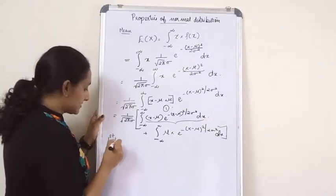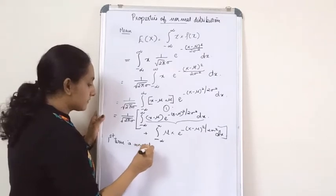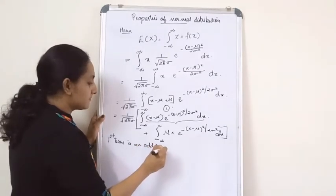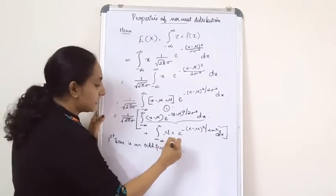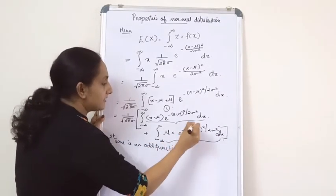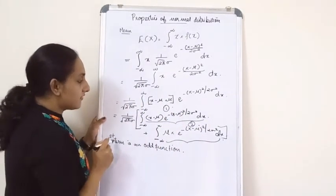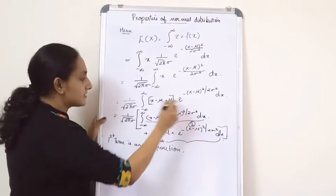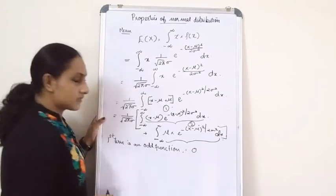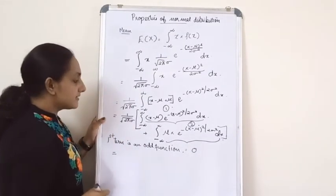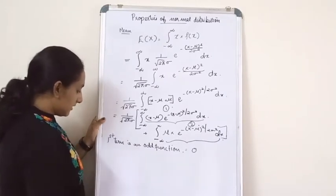The first term is an odd function. Since the first term is an odd function, when you integrate it, you will get 0. Now you have your second function. What is your second term?